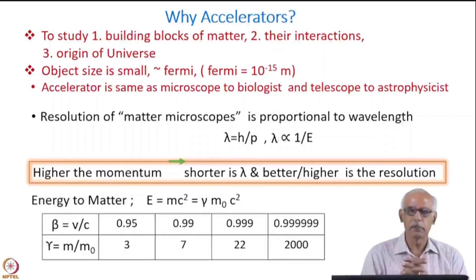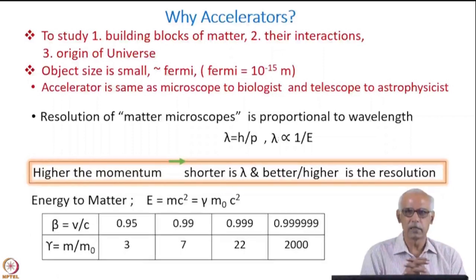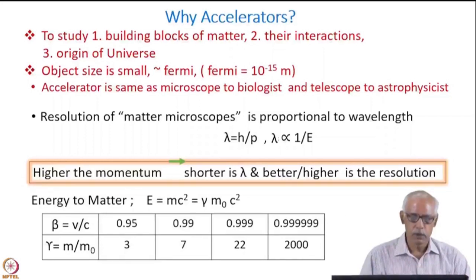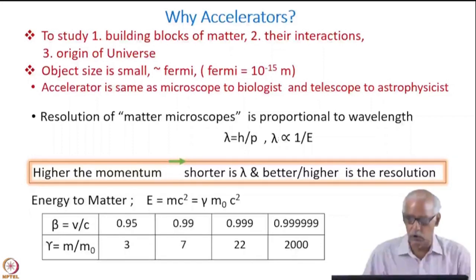The resolution of matter microscopes is proportional to the wavelength, and that is inversely proportional to the momentum. You know that momentum is proportional to root E. So higher the energy, smaller will be the wavelength and higher resolution can be achieved. This is demonstrated here: higher the momentum, that means shorter the wavelength, so you can have better resolution.